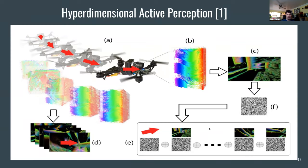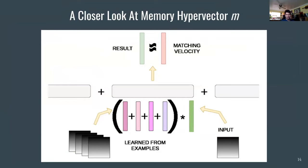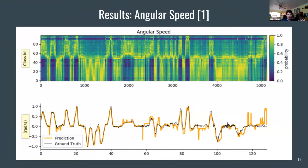The hypervectors are collected into an inference unit to predict the velocity in each X, Y, and Z direction. The memory stores, for every velocity, the pattern of events experienced over some time window, and when a similar pattern appears, the memory retrieves the matching velocity. This approach shows a smooth interpolation of angular speed over time, demonstrating that the hypervectors retain enough information to fairly well recreate the angular velocity experienced during training.